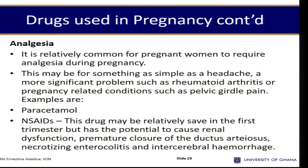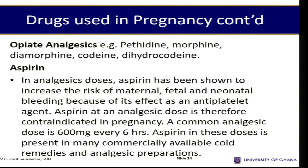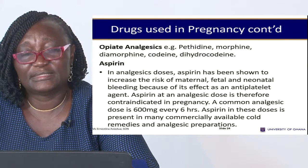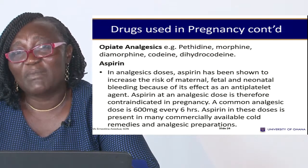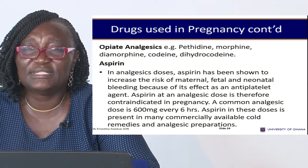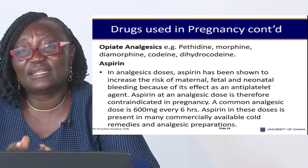Regarding analgesics: the commonly used and safer analgesic in pregnancy is paracetamol. Unless otherwise indicated, it is advisable that medications other than paracetamol be prescribed by an obstetrician. Opiate analgesics like pethidine and morphine are also commonly used in pregnancy and around the time of delivery for pain. Aspirin in analgesic doses has been shown to increase the risk of maternal, fetal, and neonatal bleeding because it is an anticoagulant and antiplatelet agent.